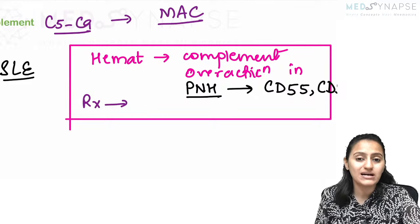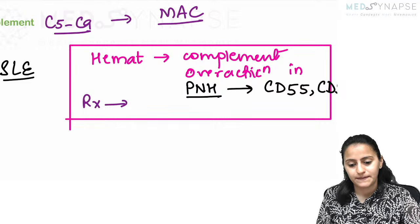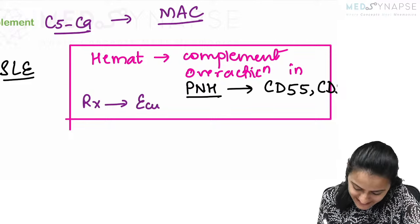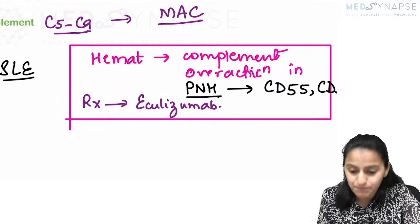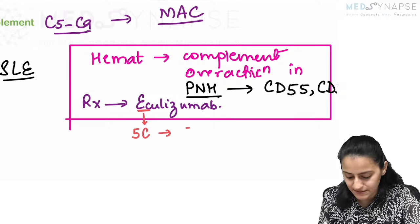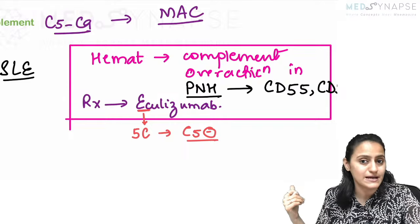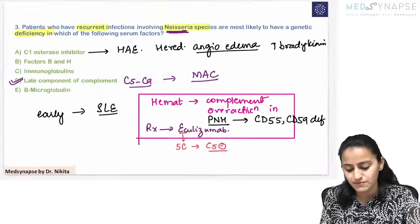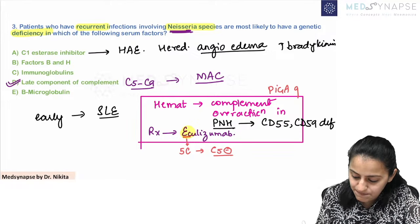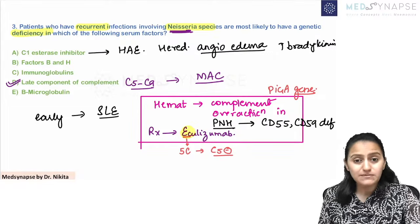The complement inhibitor drug used in PNH is eculizumab. Remember it as E and C — 'e' meaning the drug, 'C' meaning complement — it is a C5 inhibitor. By inhibiting C5, it prevents the membrane attack complex from forming. The gene affected in PNH is the PIGA gene. Never forget: Neisseria is late complement deficiency, C5 to C9.